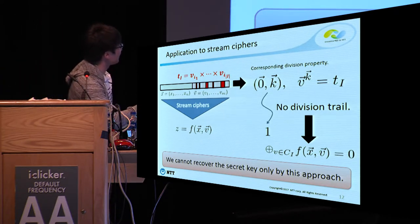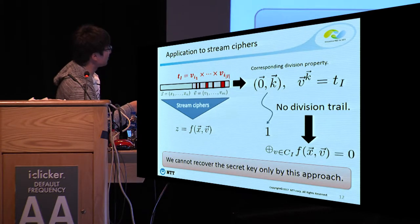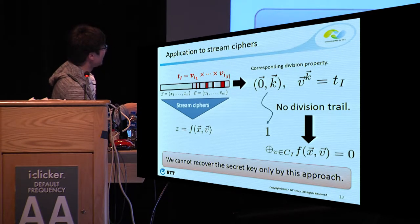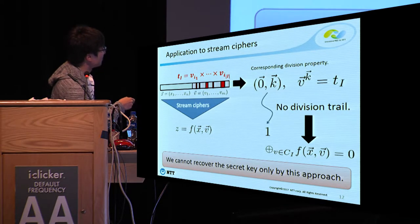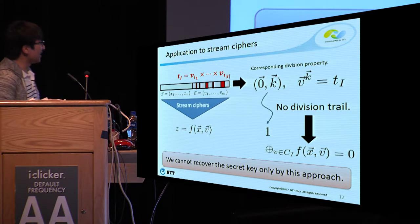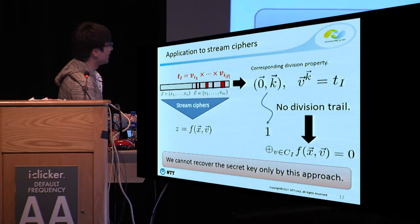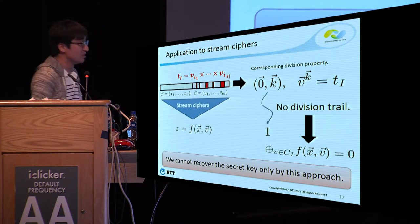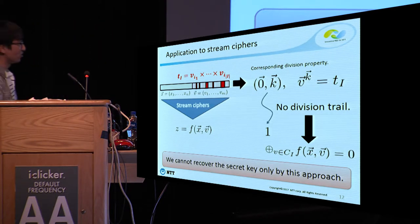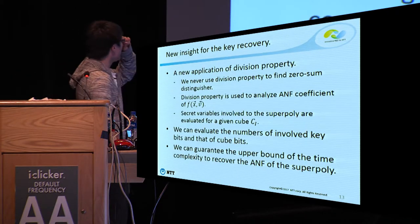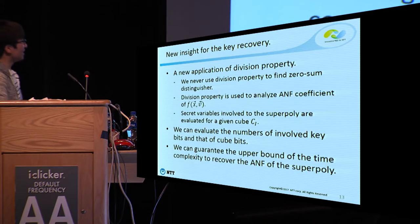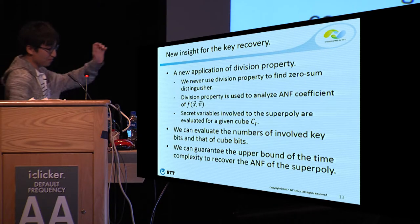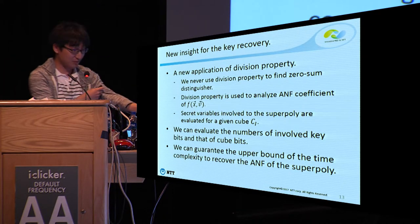We directly apply this technique to stream cipher to get an integral distinguisher — a zero-sum distinguisher. We first prepare the division property for the chosen plaintext as (0, k), where 0 corresponds to the secret key and k corresponds to the cube bits. We check the division trail from (0, k) to 1, and if no division trail exists, we know the sum of the output is always zero. But unfortunately, we cannot recover the secret key by this approach alone. To recover the secret key, we propose a new application of the division property.